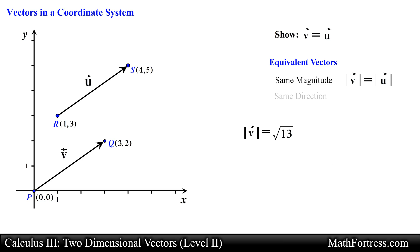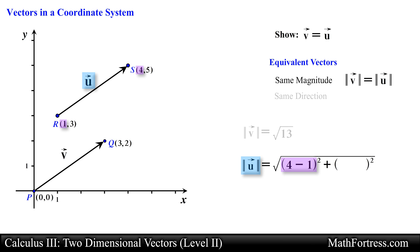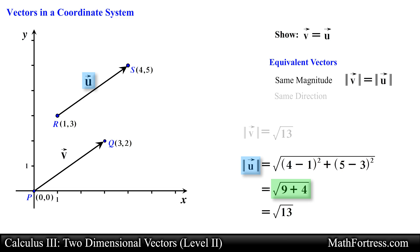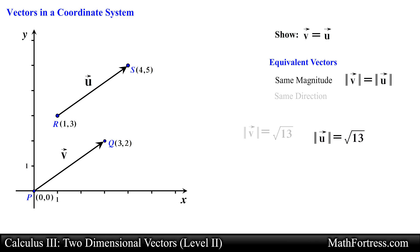In the same manner, let's calculate the length of vector u. Similar to vector v, we find the difference of the x-coordinates, square them, add it to the difference of the y-coordinates squared, then take the square root of the sum. Simplifying, we obtain the square root of 13 as the magnitude of vector u. So our first condition for vector equivalency is satisfied — both vectors have the same magnitude.